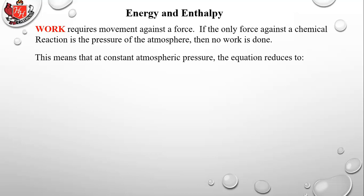This means that at constant atmospheric pressure, the equation reduces to: delta E = q, just heat. In chemistry we want to study the energy in the chemical bonds, not motion. If we can eliminate work — meaning the reaction isn't causing anything to move — then the change in energy is simply equal to the heat going into or out of the chemical reaction. Physics is interested in work and motion; chemistry is interested in the energy in chemical bonds.